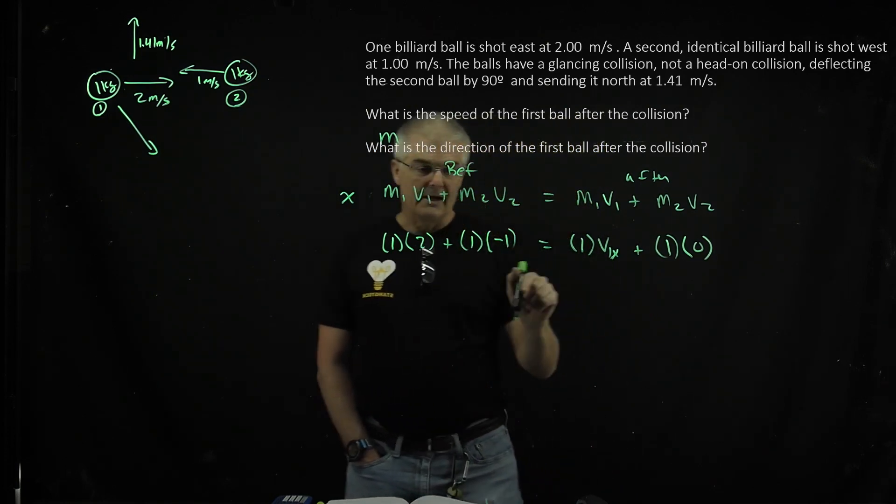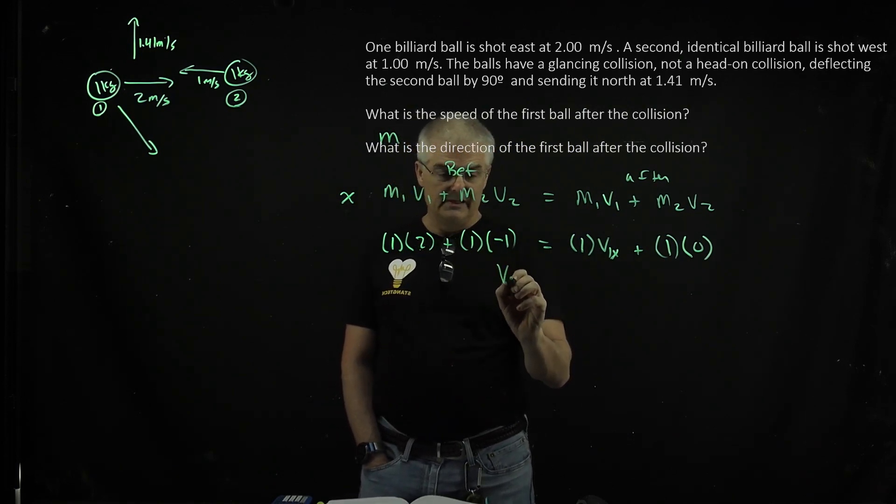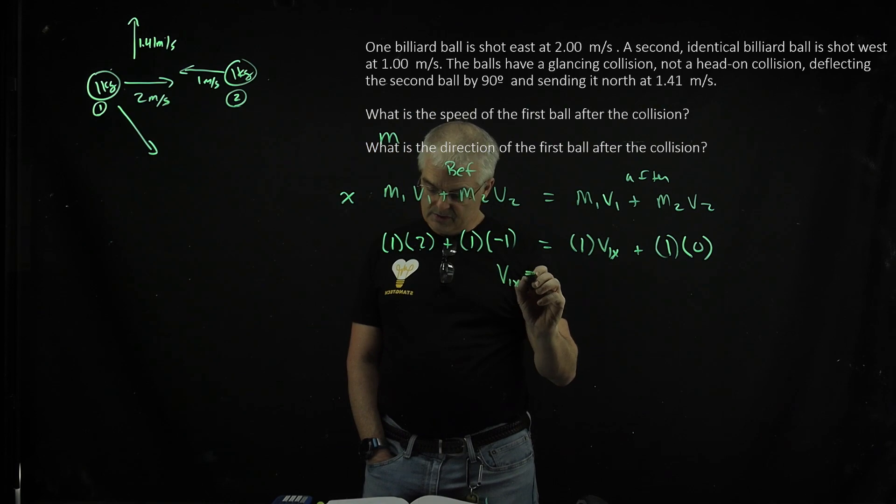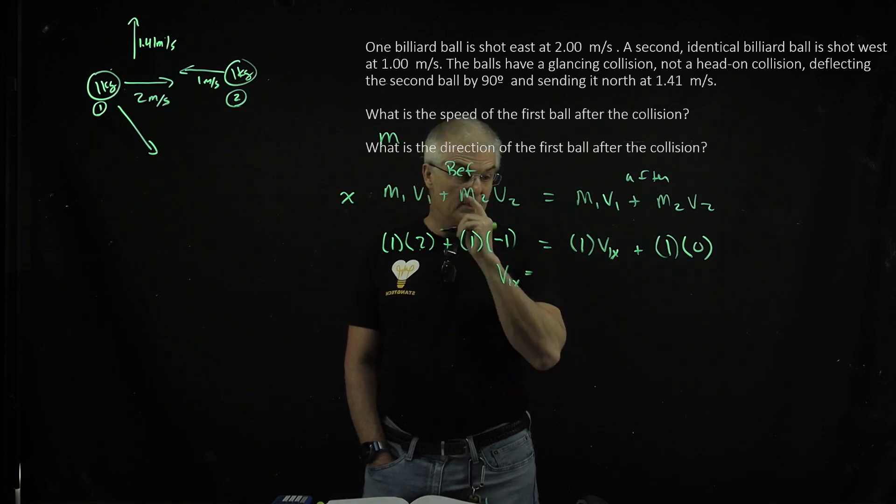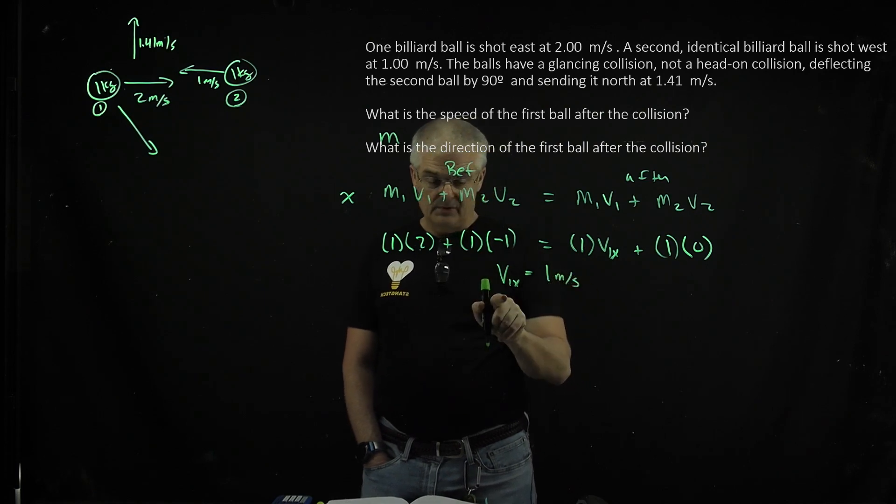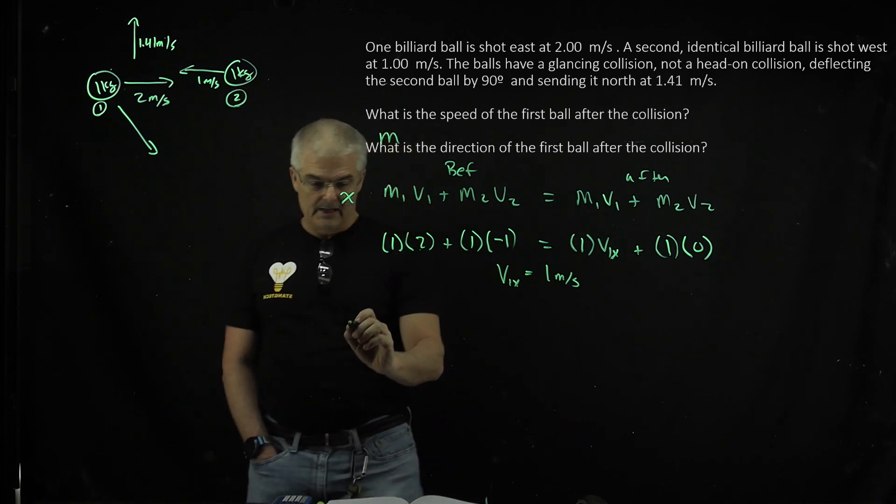So I can do, because it's just 2 minus 1 equals 1x. So I can say that v1, this is ball 1, right? In the x direction is going to just simply be 1 meter per second, right? That's important. That's not the whole answer, because I then have to repeat this same thing in the y, so let's do y.